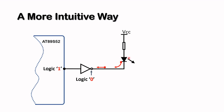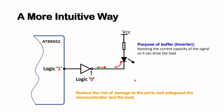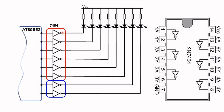The LED will switch on. Now there are two benefits of using this particular method. First, the hex inverter acts as a buffer, boosting the current capacity of the signal so you can drive the load. Second, it reduces the risk of damage to the port pins and safeguards the microcontroller and the load.